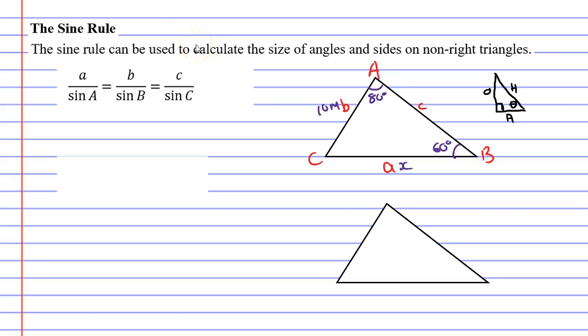Now what you'll notice is the letters that are labeled are capital A, lowercase a, capital B, and lowercase b. You'll notice that we're not using capital C or lowercase c. So if I was using my formula in this situation I would get rid of the last fraction, the c over sin C, and just use a over sin A equals b over sin B. I would then substitute and then I would solve.